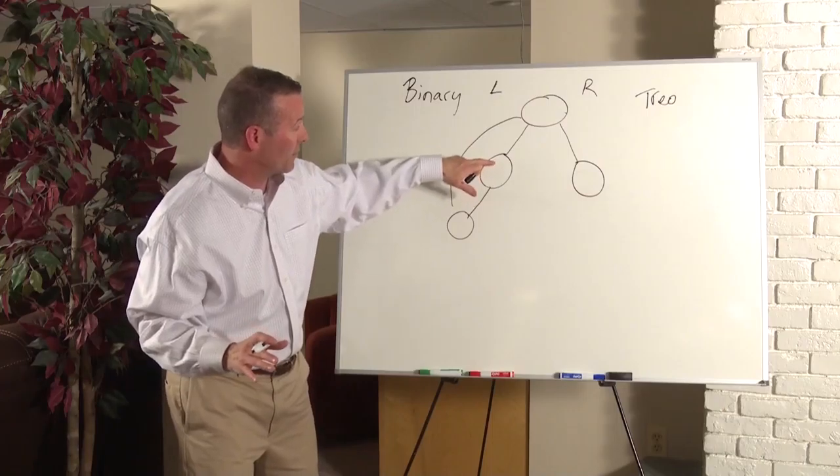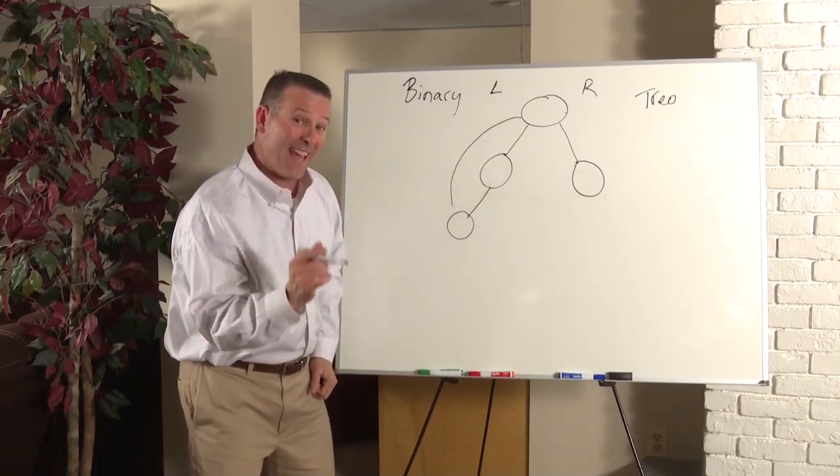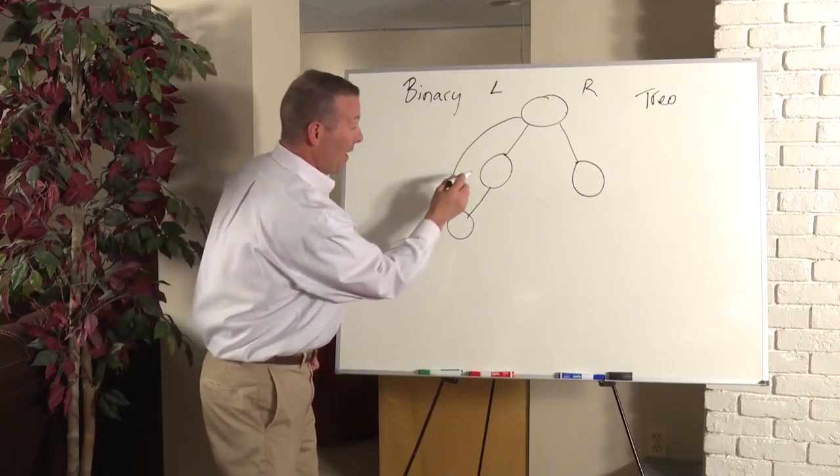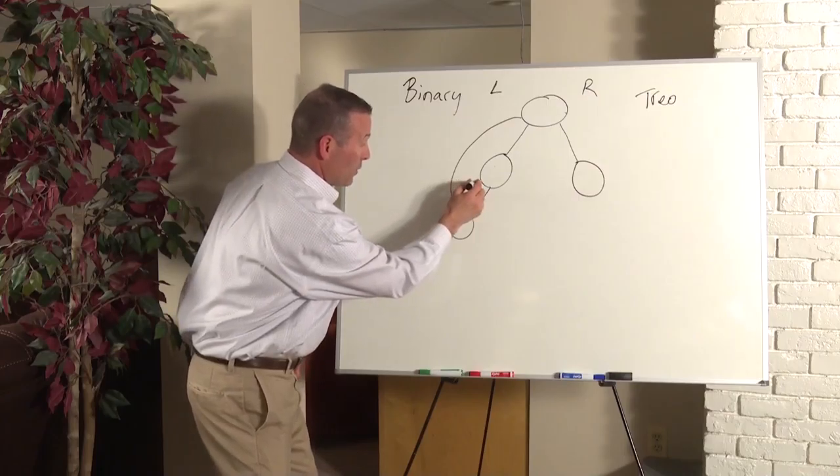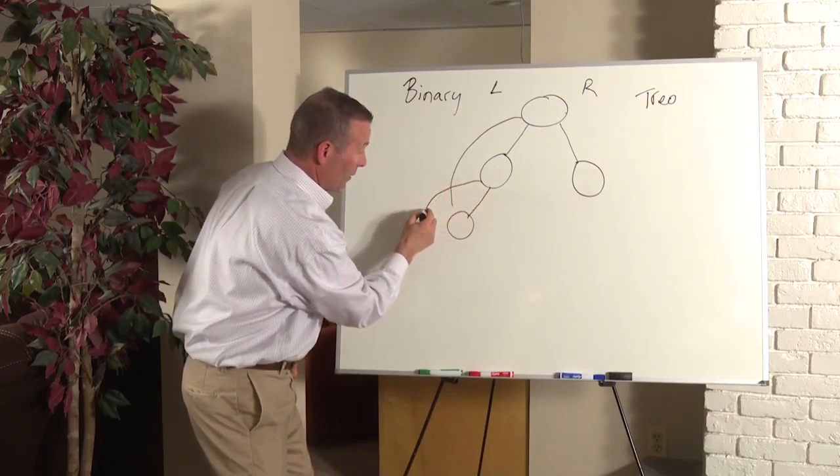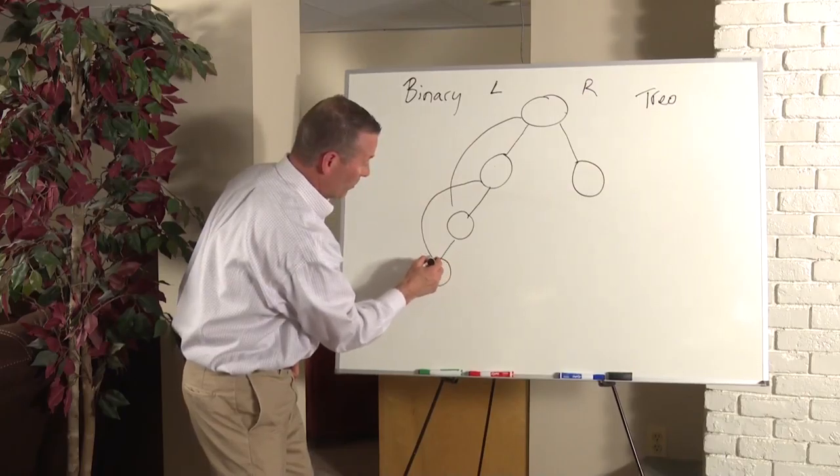Now what's powerful is because this person, the first person you brought into the business, the first person they have to bring into the business has to be on their left-hand side because they came in off of this person's left-hand side. This person's first person when they sponsor it and try to create their own trio is looking for the first available spot, which would be right here.